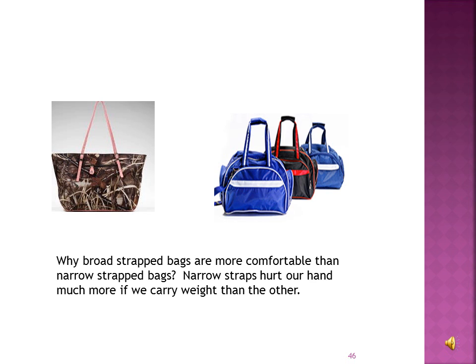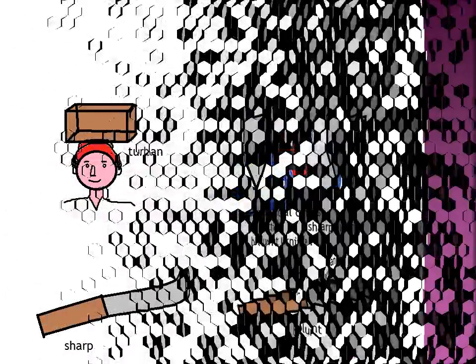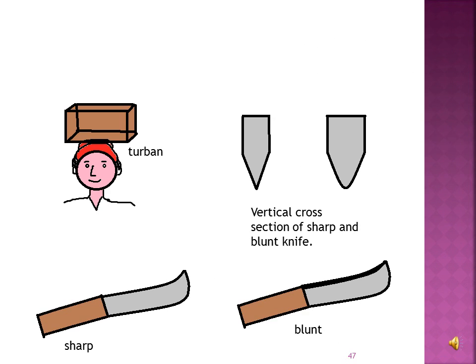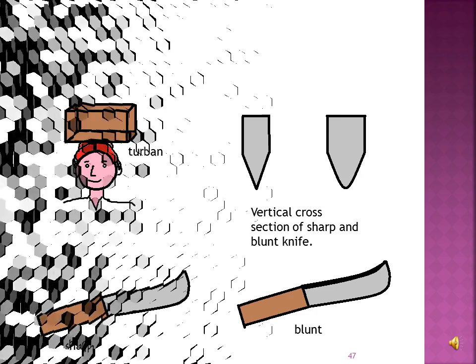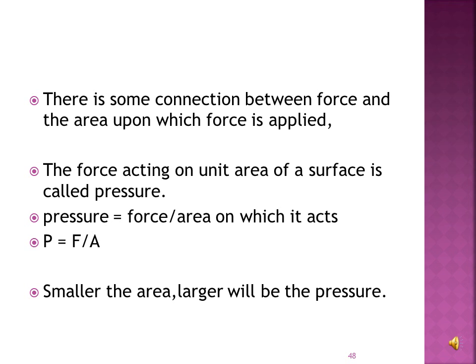Why are broad strap bags more comfortable than narrow strap bags? Narrow straps hurt our hand much more when we carry weight. Potters use a round piece of cloth on their heads when carrying heavy loads — they increase the area of contact, so pressure is reduced. It is easier to cut vegetables using a sharp knife than a blunt knife. In all these cases, the area over which the force is applied plays a key role in making tasks easier.